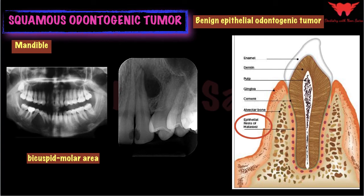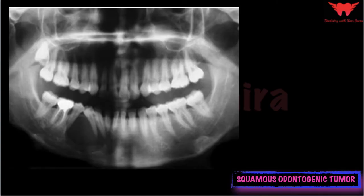The lesions are often asymptomatic, but presenting manifestations include mobility of the involved teeth. There could be pain, tenderness to percussion, and occasionally abnormal sensations may be felt. Talking about the radiographic features of squamous odontogenic tumor, it presents as a well-circumscribed, often semi-lunar or triangular-shaped unilocular radiolucent area.